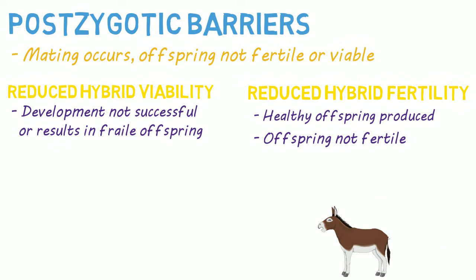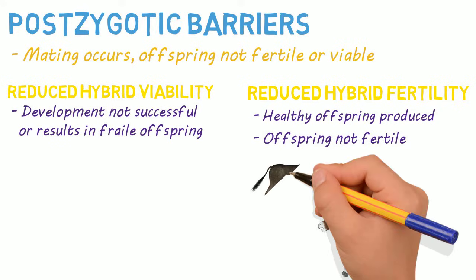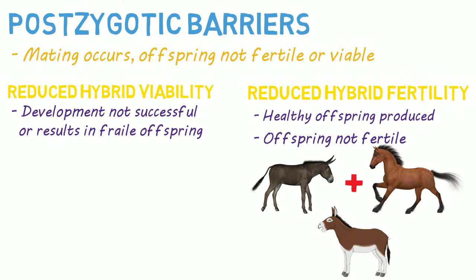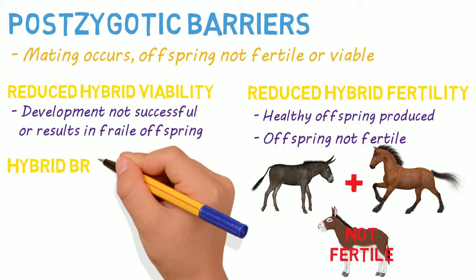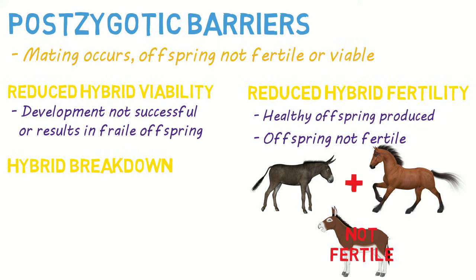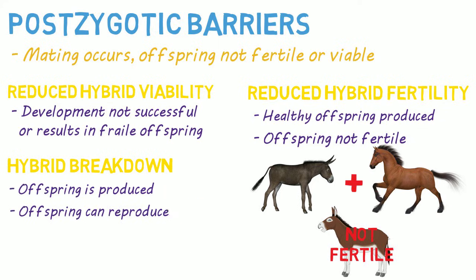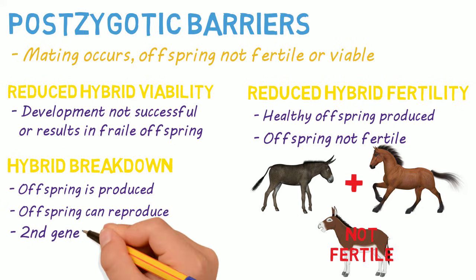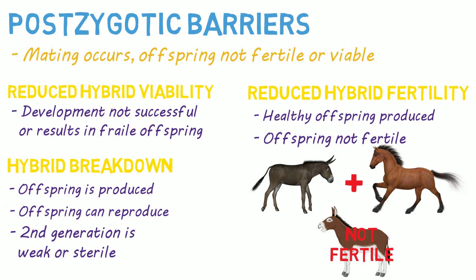The classic case is a mule, the offspring of a male donkey and a female horse. The mule lives a full life and can function just fine, except when it comes to reproducing. This is one reason that donkeys and horses are considered to be different species. A final example of a post-zygotic barrier is hybrid breakdown, in which offspring is produced and that offspring may be able to reproduce, but the second generation will be weak and or sterile.